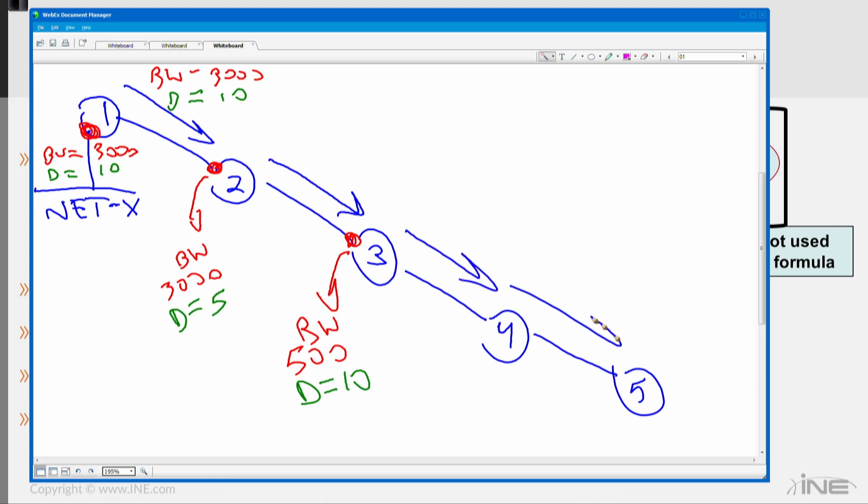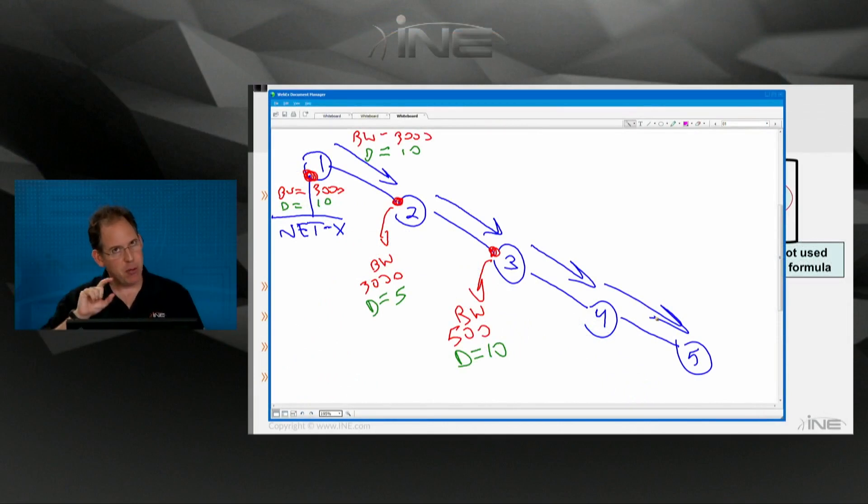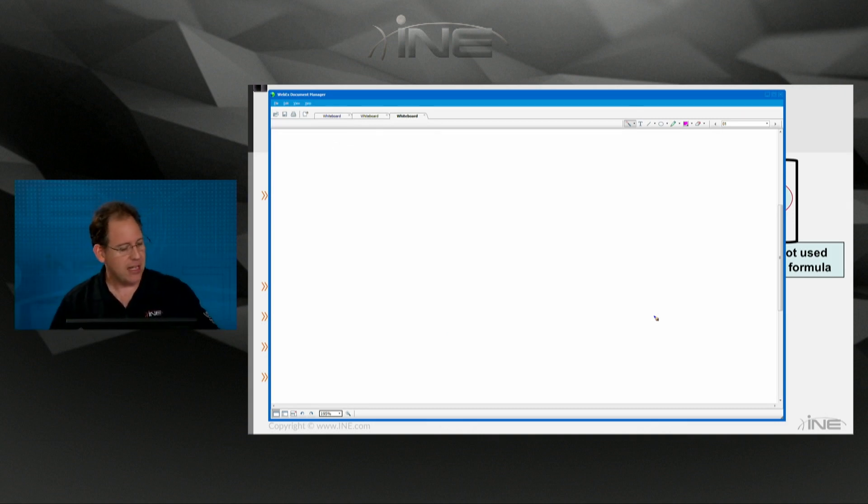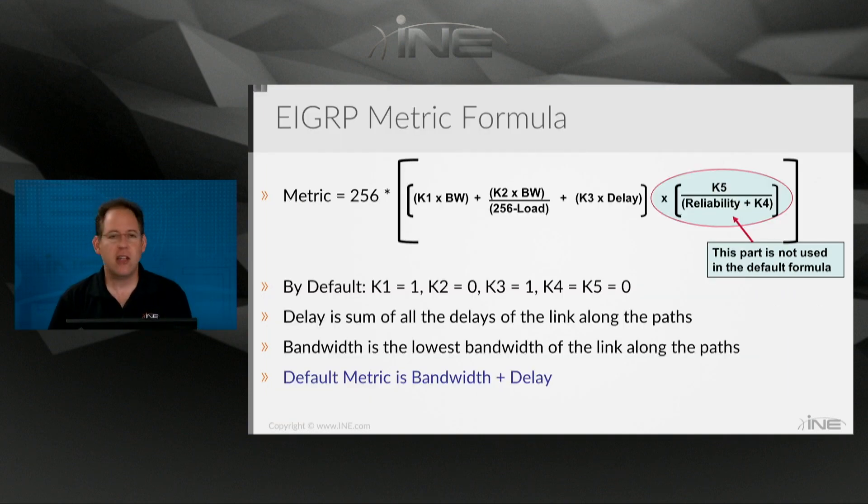Each router is going to say, okay, what bandwidth is my neighbor telling me about? Is my bandwidth leading to him lower than what he's telling me? Because if it's lower, I'm going to swap his number with my lower number, because all I care about is the slowest bandwidth along the path, not the fastest bandwidth—the slowest bandwidth. And then what's the total delay my neighbor is saying it takes to get to that network? Well, let me add that into what my delay is to reach that neighbor. So that's why we say here on this slide that the delay is the sum of delays along the path, and the bandwidth is the lowest bandwidth. That is something you do need to know. They're not going to expect you to know the formula, but they will expect you to know those bullet points.